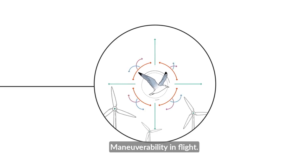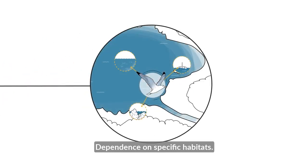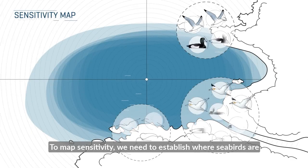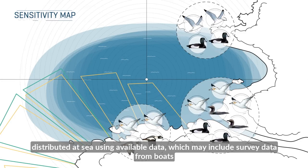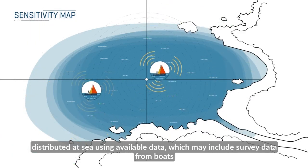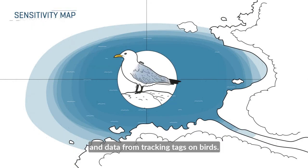Maneuverability in flight. Dependence on specific habitats. To map sensitivity, we need to establish where seabirds are distributed at sea using available data, which may include survey data from boats and data from tracking tags on birds.